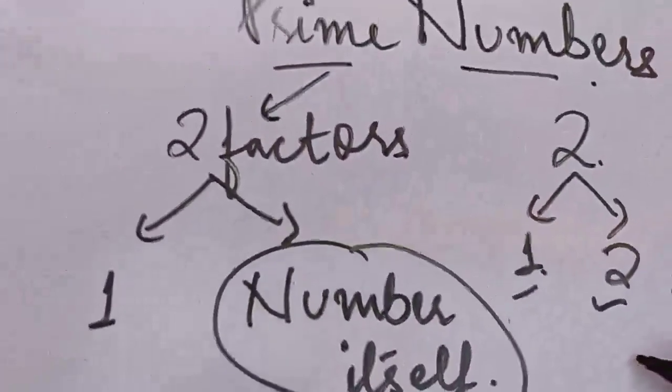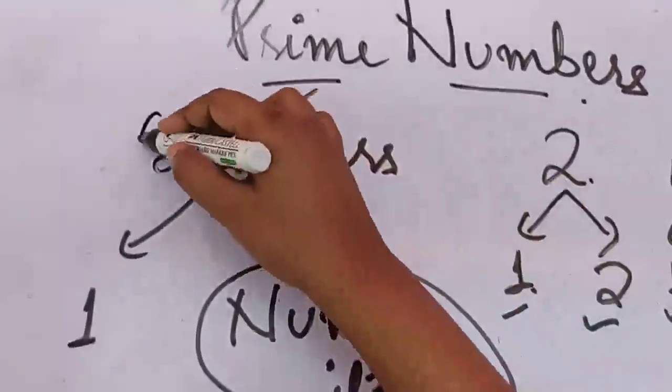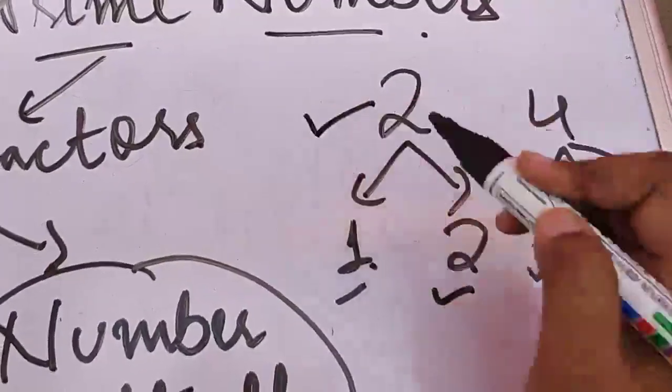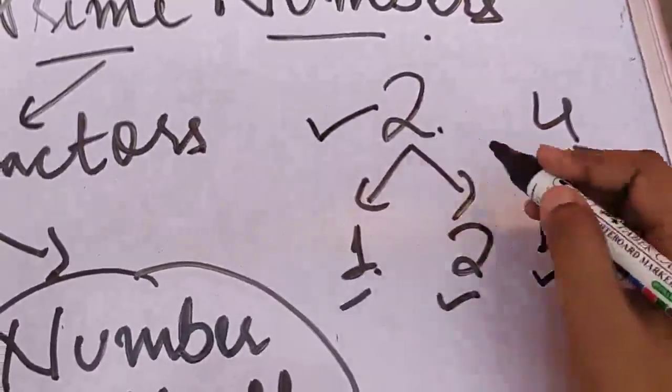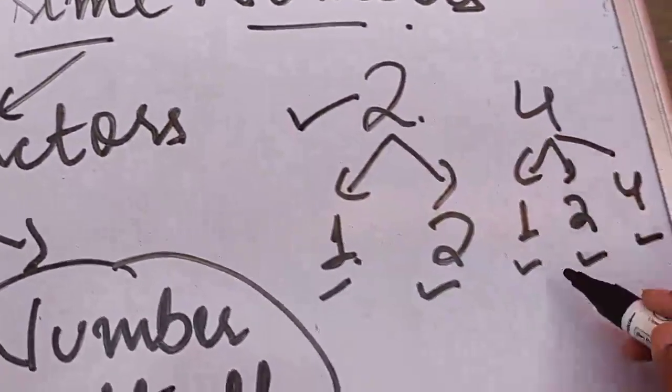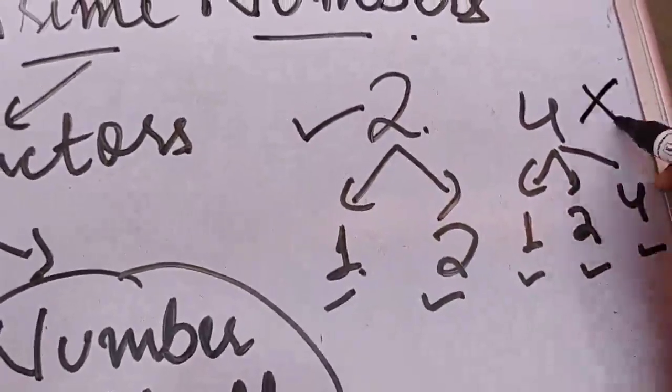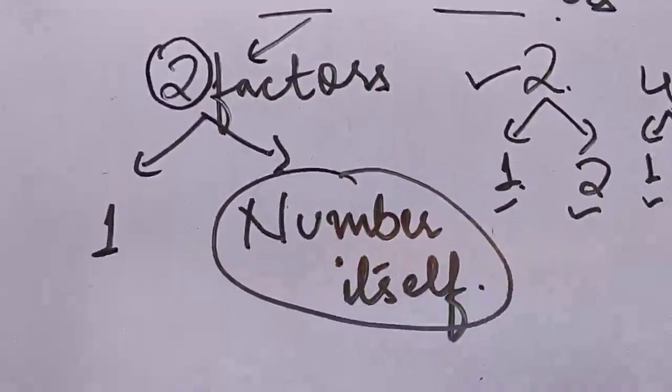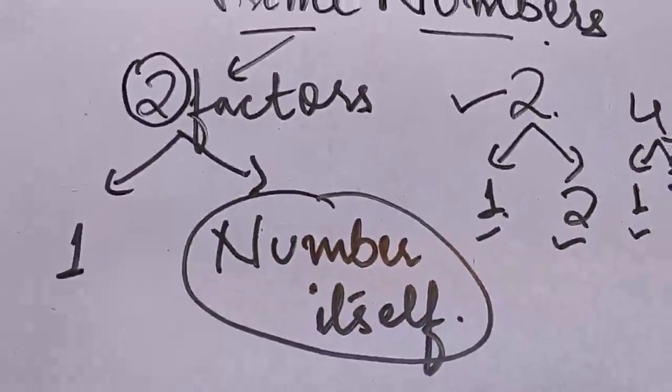And what is the condition for prime numbers? How many factors should we have? Two. So who is satisfying this condition? 2. So 2 is prime. And 4 is not satisfying because it has three factors. So it is not prime. Let's look at some small points.